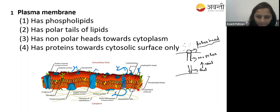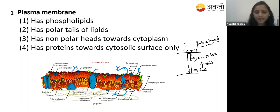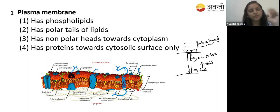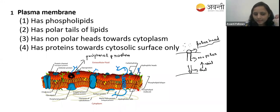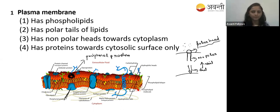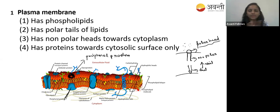Here you can see the integral protein - these proteins are integrated between the two bilayers. On the outside we can also see peripheral proteins which attach to the lipid layer. On the inner cytoplasmic side also, and on the extracellular surface also, those proteins not integrated inside the plasma membrane are called peripheral proteins.